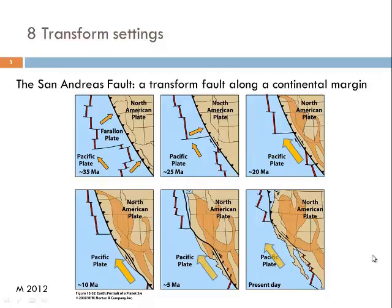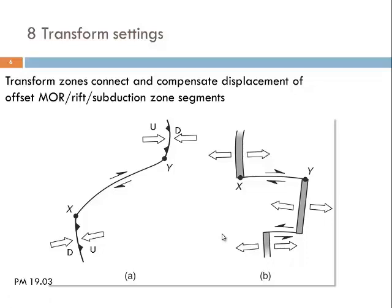Generalizing the different kinds of settings we see with transform faults: the most common type connects the spreading segments of mid-oceanic ridges. We have also seen, as in the case of New Zealand, that transform faults can connect different segments of subduction zones. You can also combine segments of mid-oceanic ridges with segments of subduction zones, connected by transform faults.